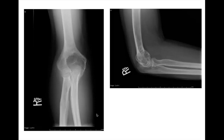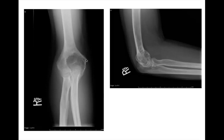We already saw this case — the chondroblastoma from earlier. This is a geographic lytic lesion, narrow zone of transition, non-sclerotic border, eccentrically located in the epiphysis and metaphysis of the distal humerus. Harder to see on the lateral view. This was the chondroblastoma. Remember, chondroblastomas are epiphyseally located or epiphyseally based lesions.